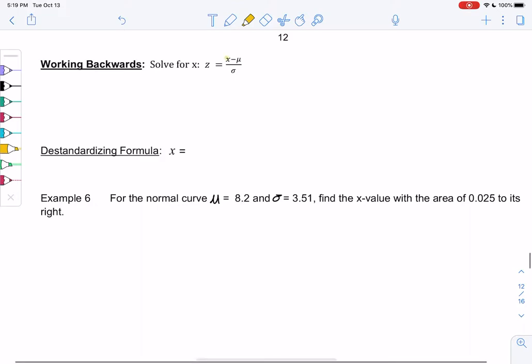We're going to solve for x in this z-score formula. I'm going to multiply by sigma to solve for x, so we get z times sigma equals x minus mu. And then you can add mu to both sides.